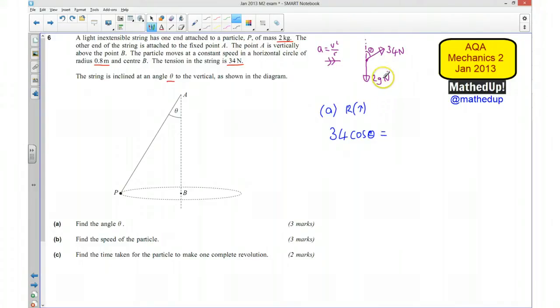2 times 9.8 is 19.6 newtons, so cos theta equals 19.6 over 34, and theta works out to be 54.8 degrees.